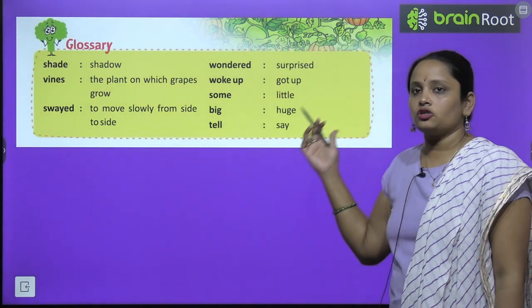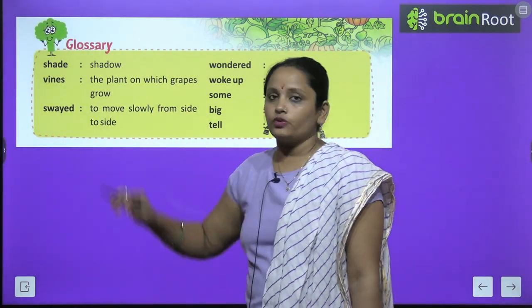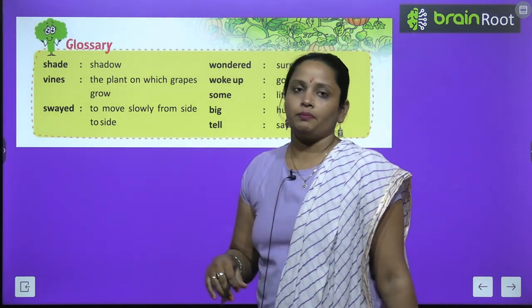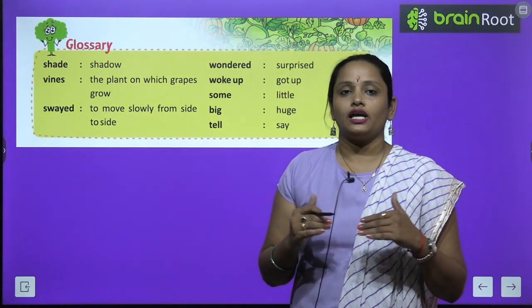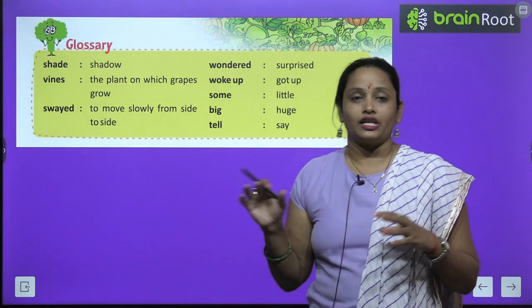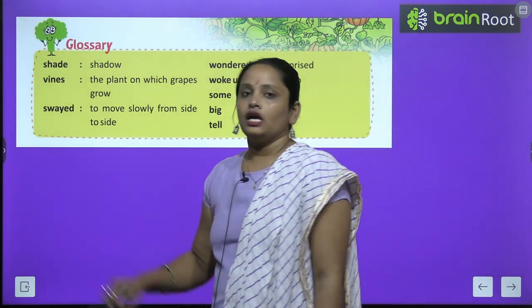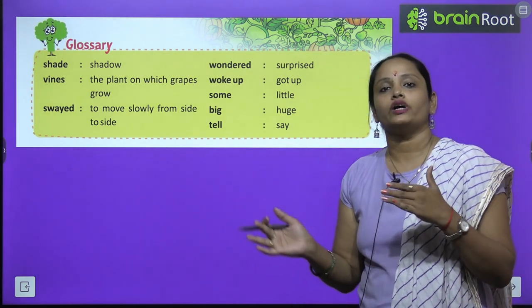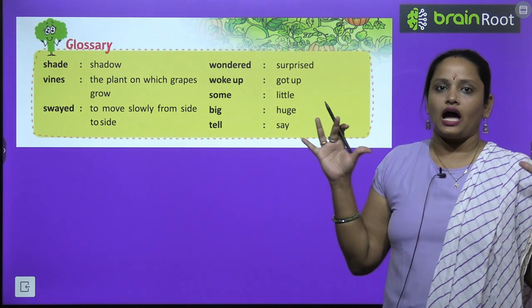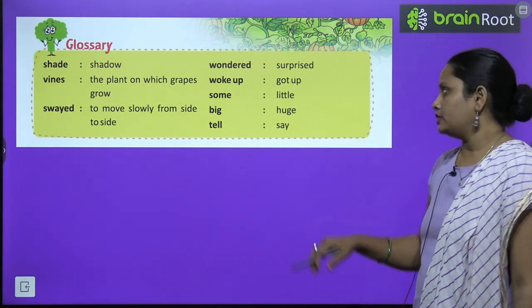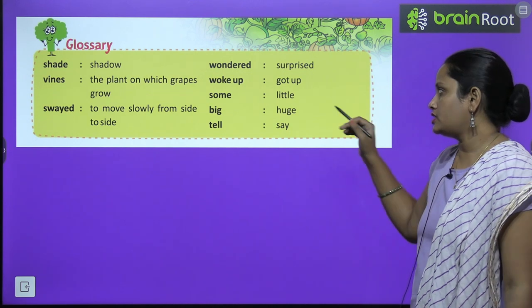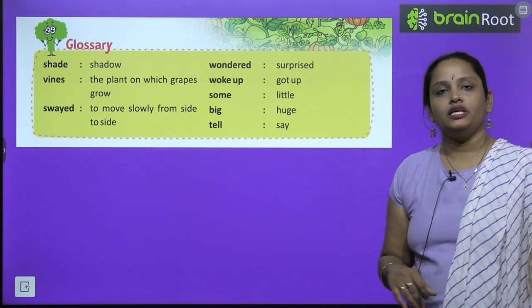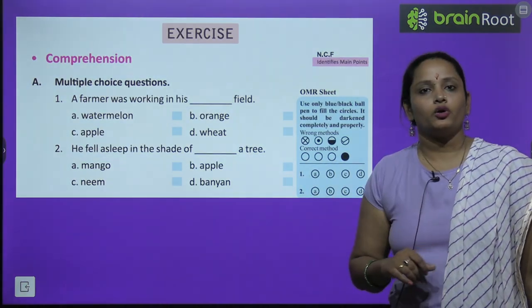Now children, let's move on to glossary. First word is shade — shade means shadow, chhav. Vines — the plant on which grapes grow, bale. Swayed means to move slowly from side to side. Wondered means surprised. Woken up means got up, uth jana. Some means little, thoda sa. Big means huge, bada. Tell means say. Now let's move on to the book exercise.